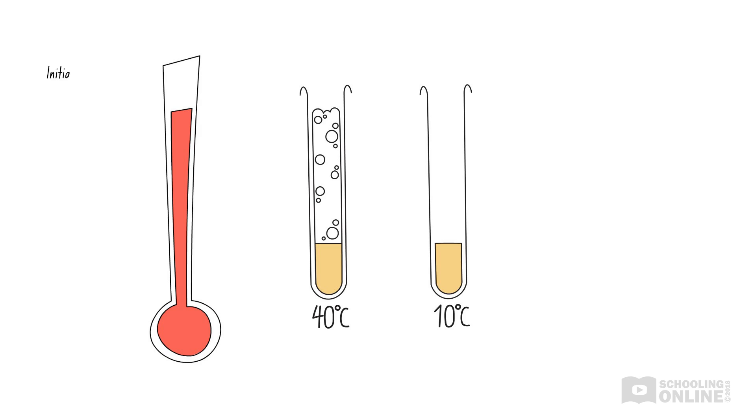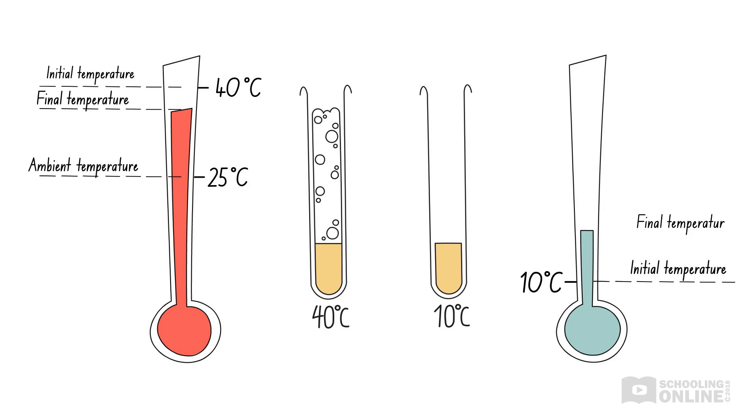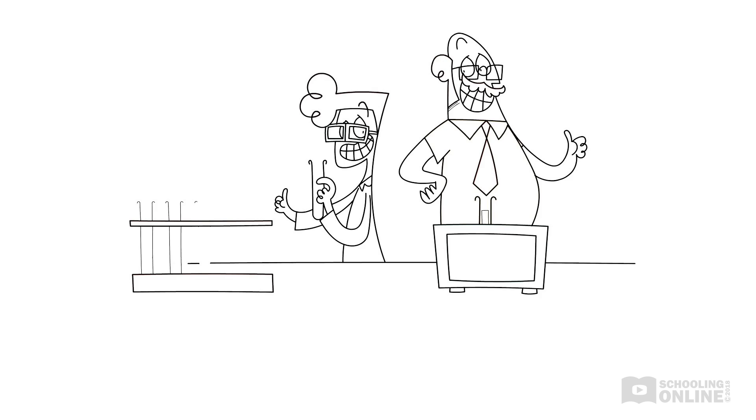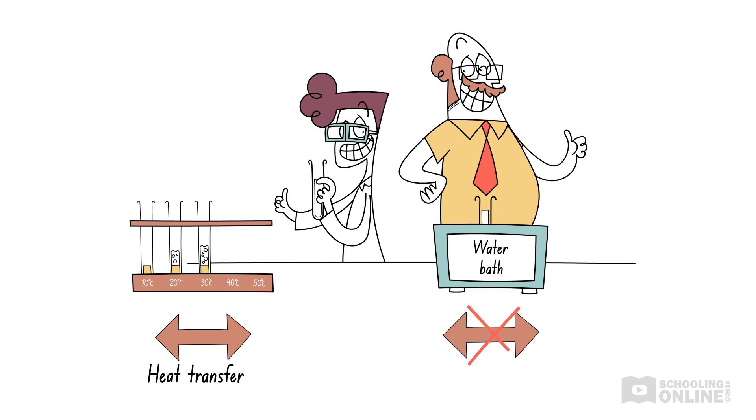Therefore, the temperature of the catalase enzyme mixture in each test tube will change. For example, the mixture in the test tube heated to 40 degrees Celsius will gradually cool down to ambient temperature, which is 25 degrees Celsius. Meanwhile, the mixture in the test tube cooled to 10 degrees Celsius will eventually warm up to 25 degrees Celsius. Consequently, our experiment will occur at different temperatures than what we originally planned. This may affect the activity of the catalase enzyme in each test tube and reduce the accuracy of our results. To avoid this problem, we can modify the apparatus to avoid heat loss or gain. For example, instead of leaving the test tubes in the open, where they can easily exchange heat with the surrounding air, we can place them in a laboratory water bath. This will ensure that the test tubes are maintained at a consistent temperature, allowing us to obtain accurate results.